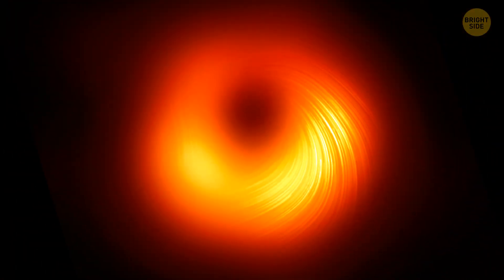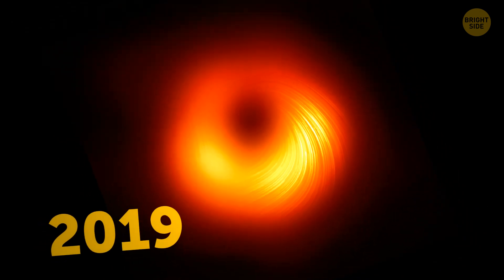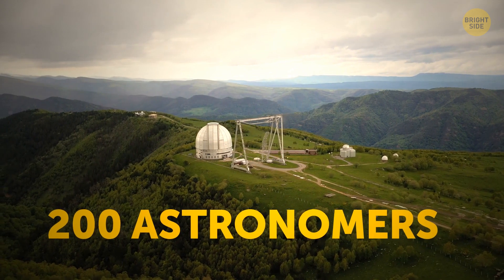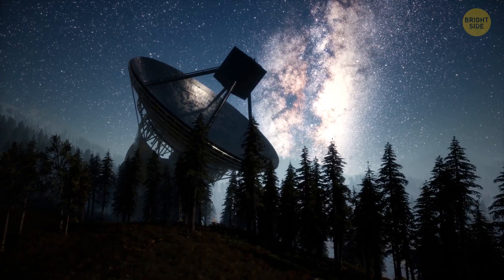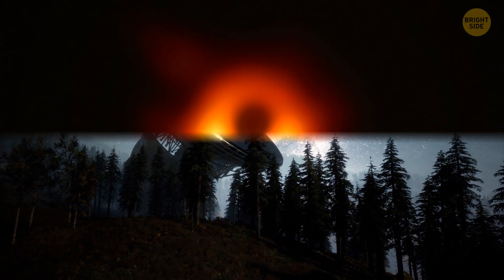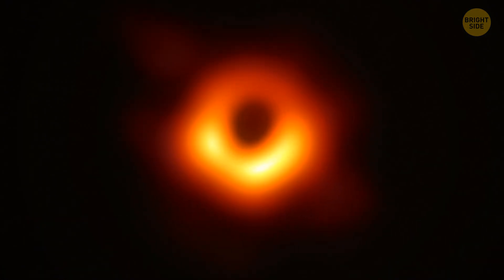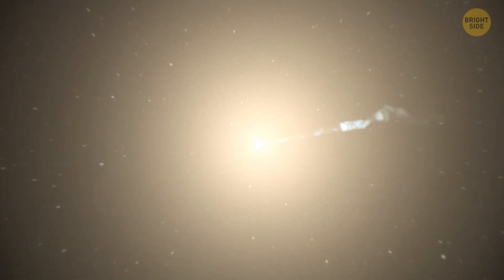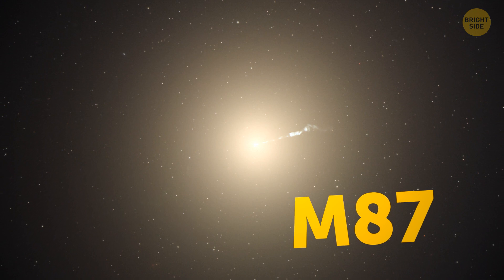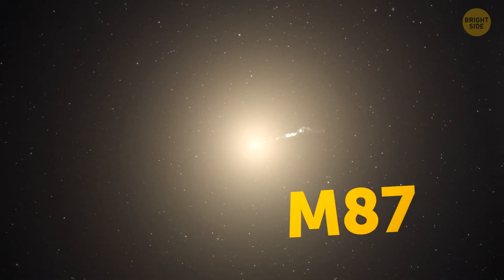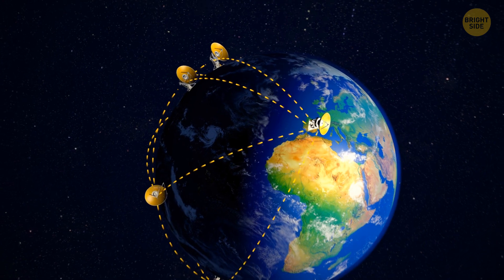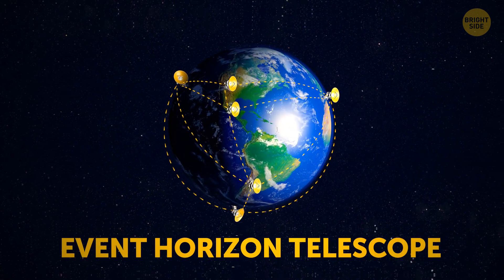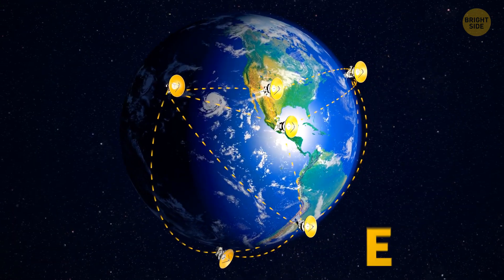By the way, the first photo of a black hole was taken in 2019. An international team of scientists, consisting of more than 200 astronomers, had been working for years to get this result. And their efforts finally paid off. The object in the photo is about 55 light-years away from Earth, at the center of the galaxy M87. You can now admire this amazing space phenomenon thanks to the work of a vast global network of telescopes called the Event Horizon Telescope Collaboration, or simply EHT.